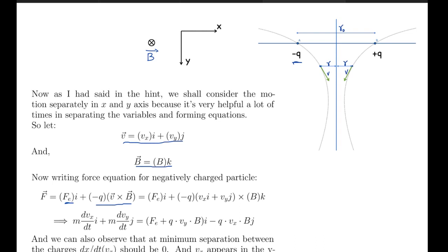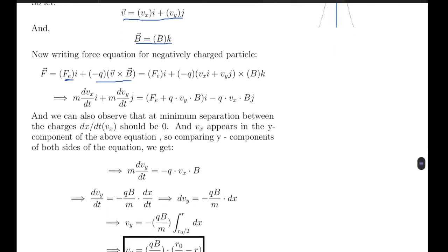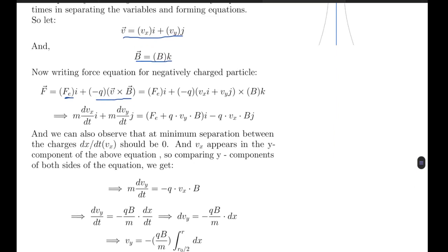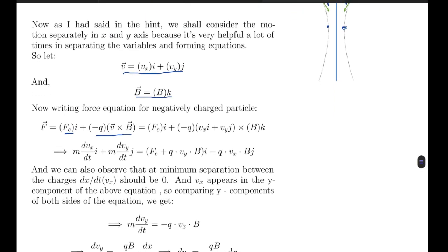From here what we get is m dvx by dt i cap plus m dvy by dt j cap equals to Fe plus q vy B i cap minus q vx B j cap. And we can also observe that at minimum separation between the charges, dx by dt should be zero. So from here, when they come at the minimum separation as shown in the diagram, the velocity in the x direction should be zero, and vx appears in the y component of the above equation.